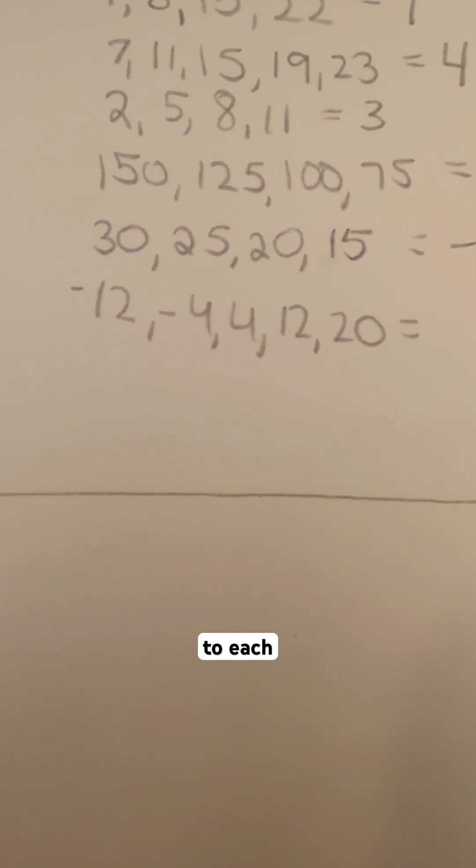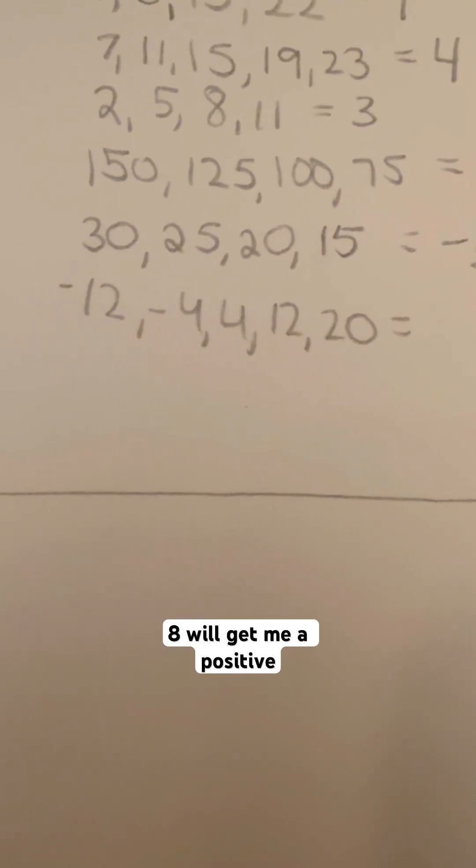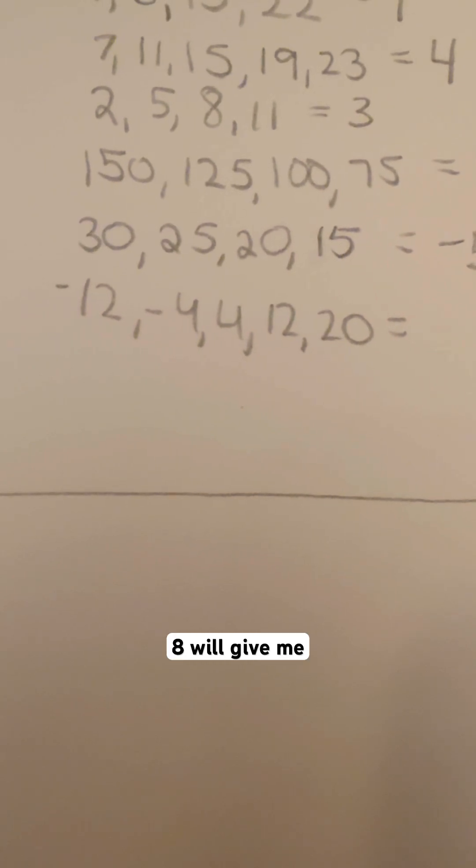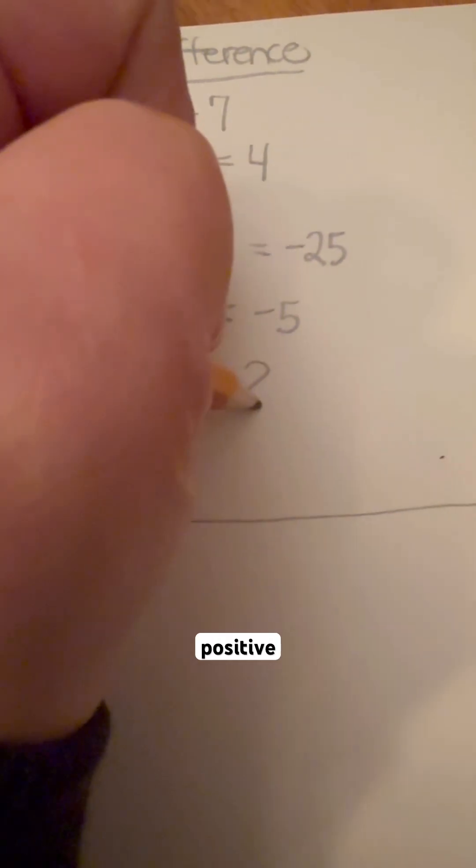So if we keep adding 8 to each number, negative 4 plus 8 will give me positive 4. 4 plus 8 is going to give me 12. 12 plus 8 will give me 20. So my common difference in this case is positive 8.